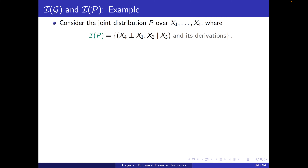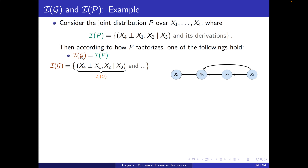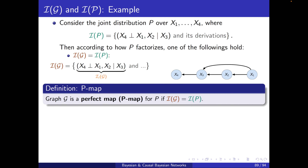Let's see some examples. Consider the joint distribution X1 to X4. We assume that IP is: X4 independent of X1 and X2 conditioned on X3, and its derivations. According to how P factorizes, either IG matches exactly IP — like in this example, the local independences give us exactly what appears in IP, and IG does not give us anything further. In this case they are equal, and that is what we call a P-map. Graph G is a perfect map, or P-map, for P if IG equals IP.